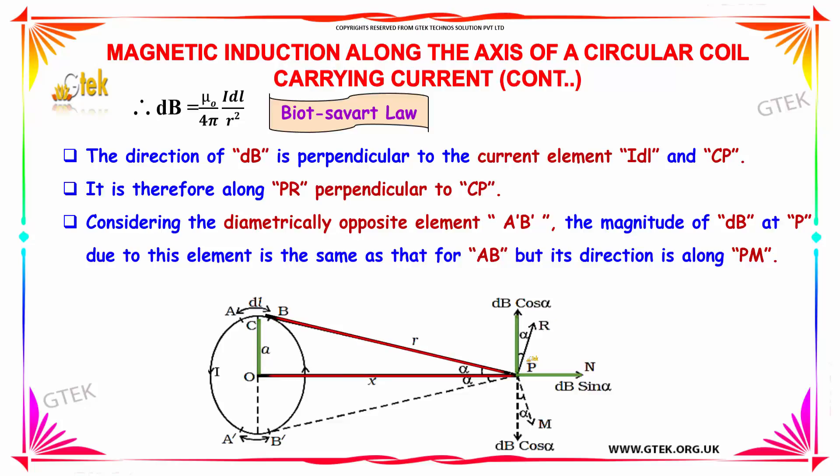Considering the diametrically opposite element A dash B dash, the magnitude of dB at P due to this element is the same as AB but its direction is along PM, this line.